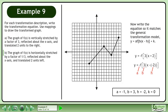The a value is negative 1, the b value is 3, and the h value is negative 2.